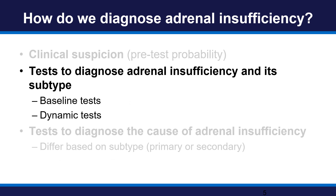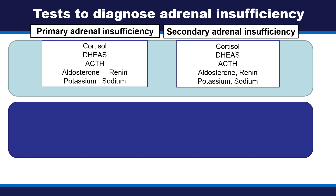Let's review baseline tests to diagnose adrenal insufficiency. In both primary and secondary adrenal insufficiency, cortisol and DHEA-sulfate are low. In primary insufficiency, ACTH is high, while in secondary insufficiency, ACTH is low or inappropriately normal. Secondary insufficiency does not present with aldosterone deficiency, so aldosterone, renin, potassium, and sodium are all within normal ranges. This is not the case with primary adrenal insufficiency, in which the majority of patients develop aldosterone deficiency — we see low aldosterone, high renin, and in advanced cases, high potassium and low sodium.